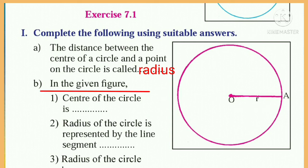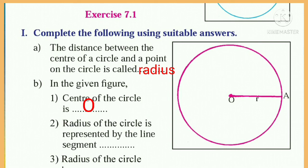Question B: In the given figure — first, the center of the circle is O. Second, the radius of the circle is represented by the line segment, denoted as small r. Third, the radius of the circle is line segment OA.